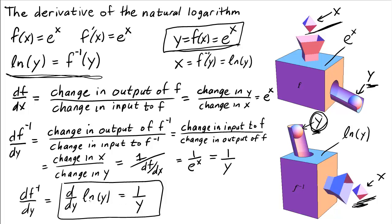Of course it didn't matter that I used the letter y here — I could have used the letter z or x or anything. So, for example, the derivative of ln(z) is 1 over z.